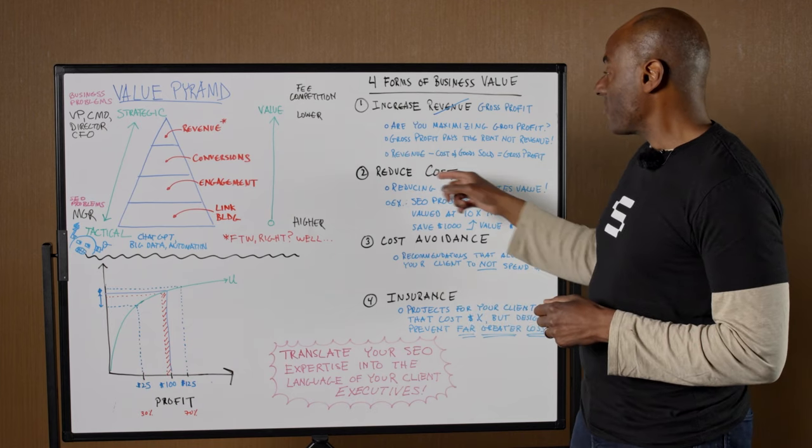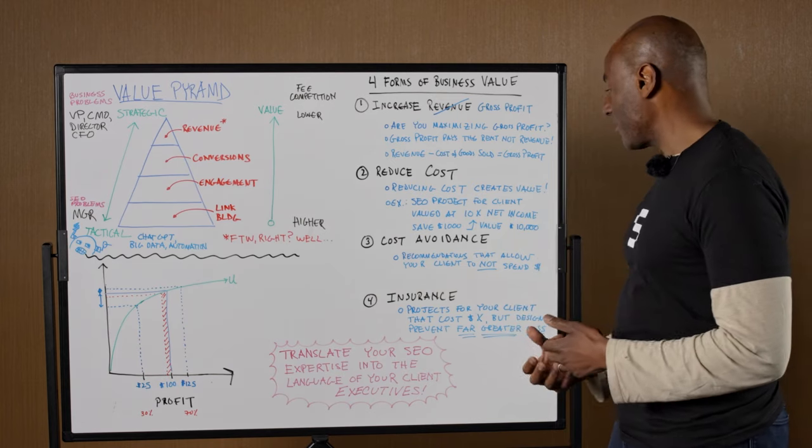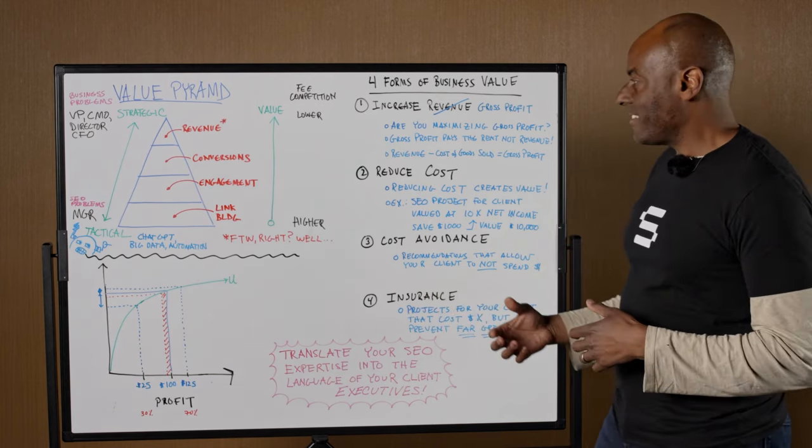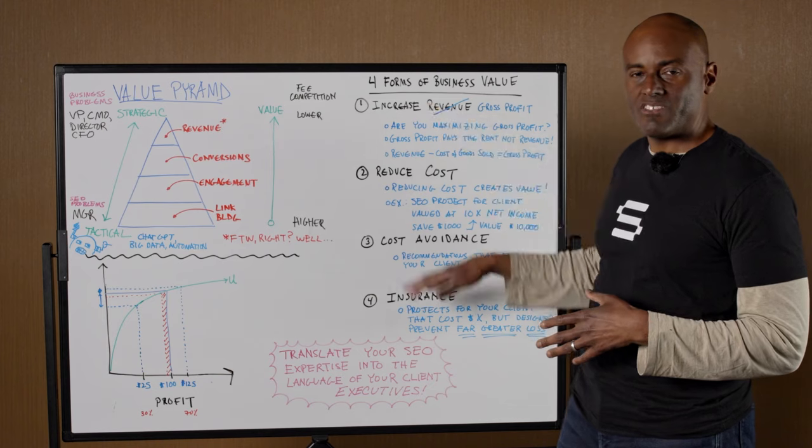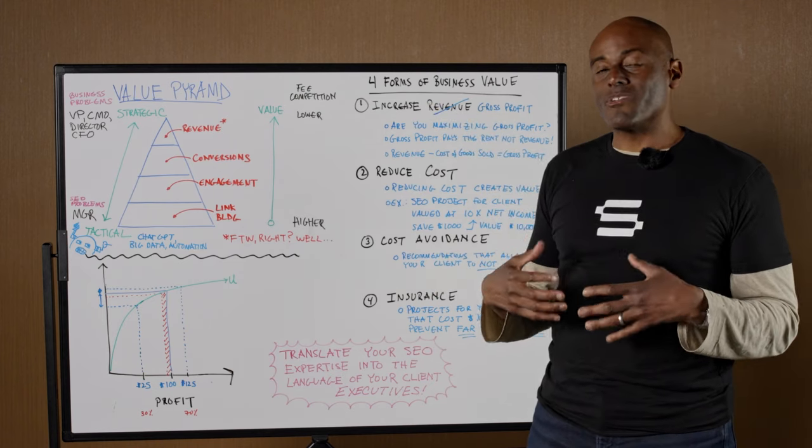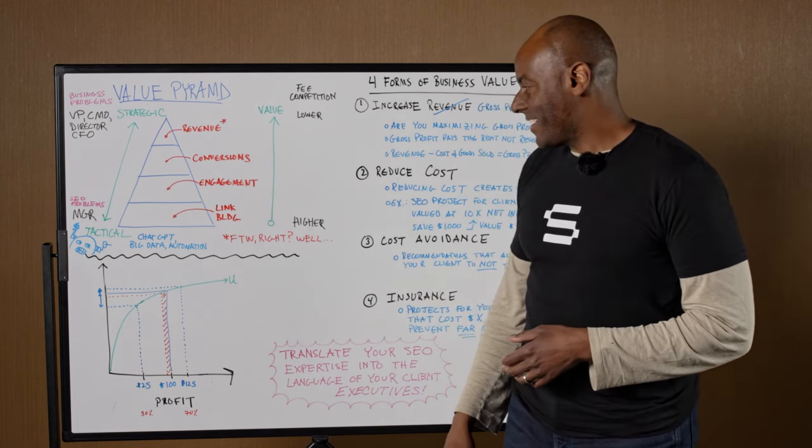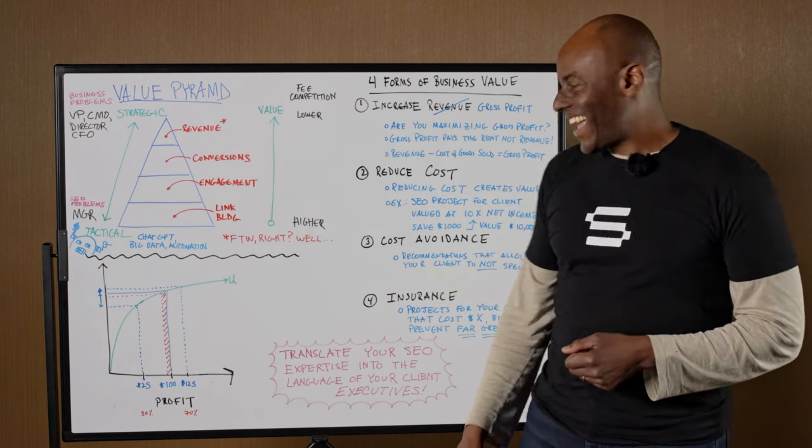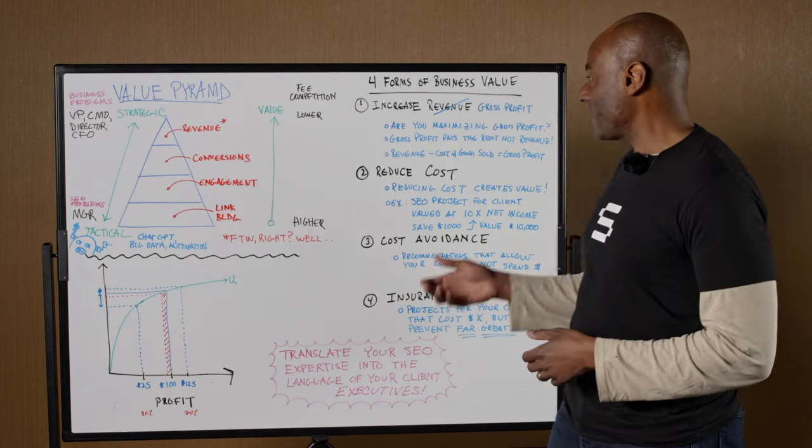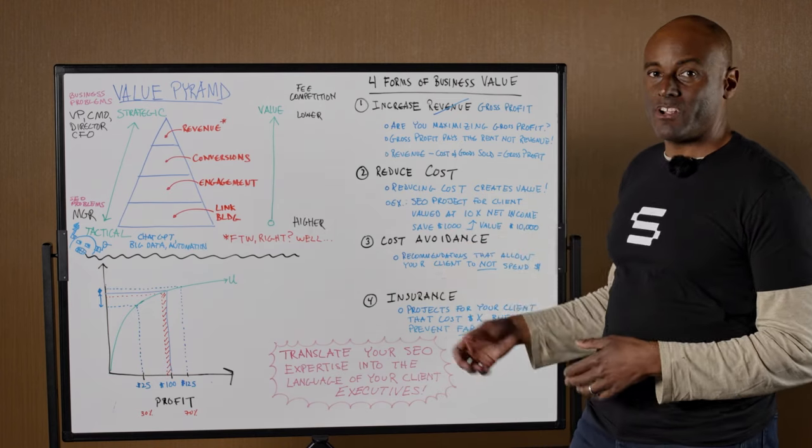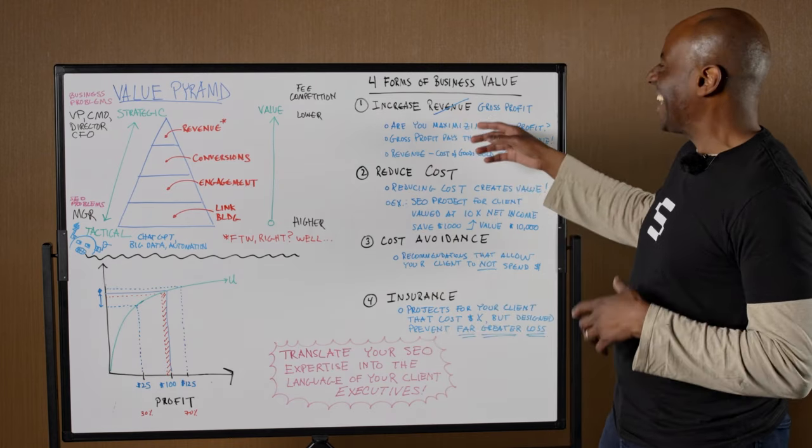That gets us to the four types of business value. There's at least four, there's a fifth I'll touch on briefly. We can increase revenue, but not so fast, gross profit. We can reduce cost. We can do something called cost avoidance. And then there's insurance value. Down here, there's a utility curve, and I'll get to why that's important. It'll help me explain how these things over here create value.